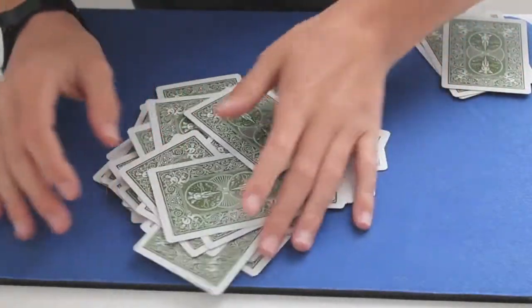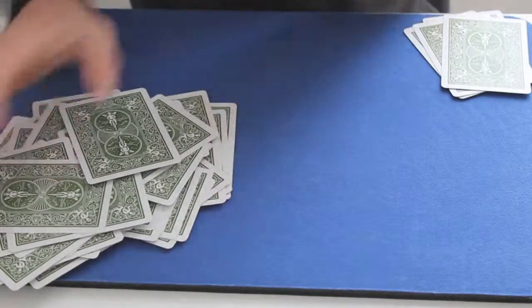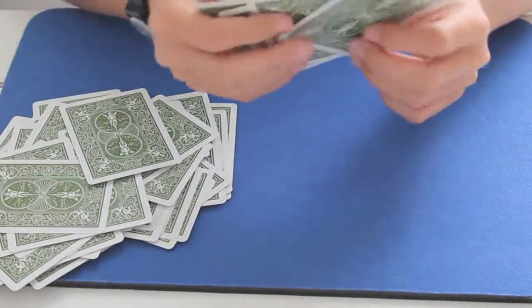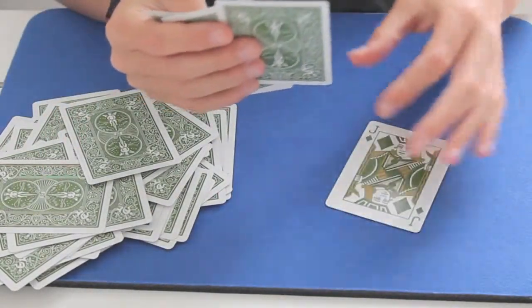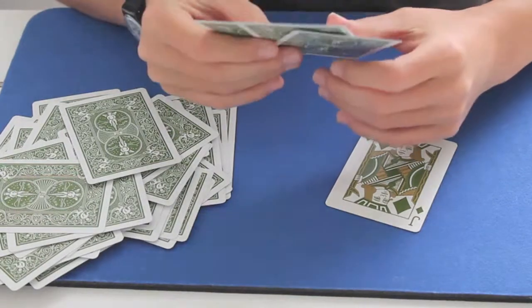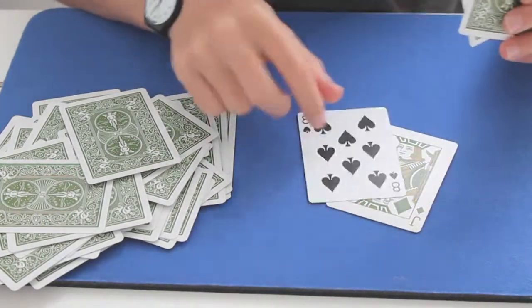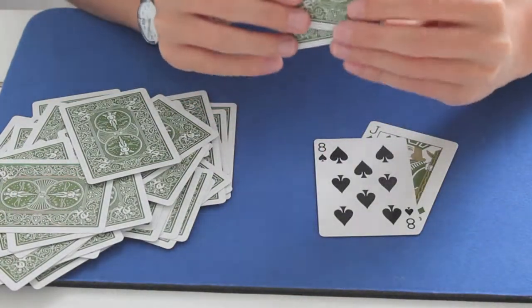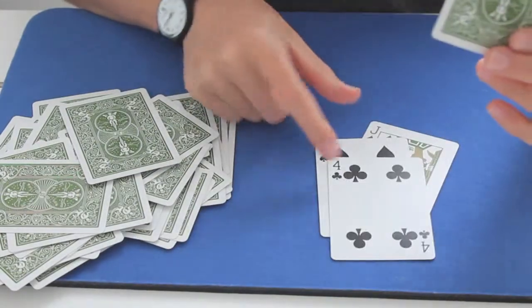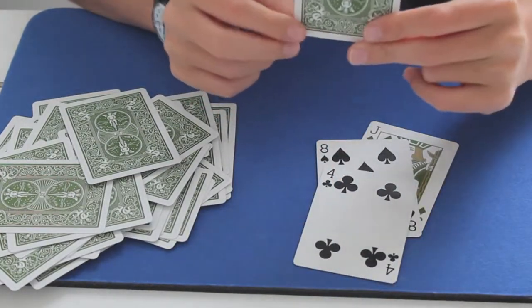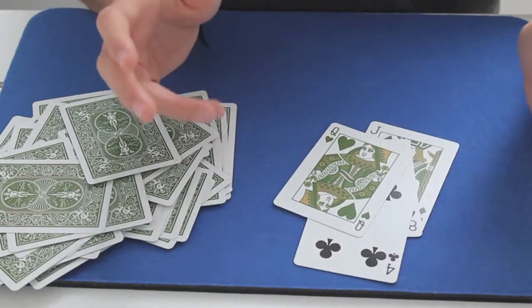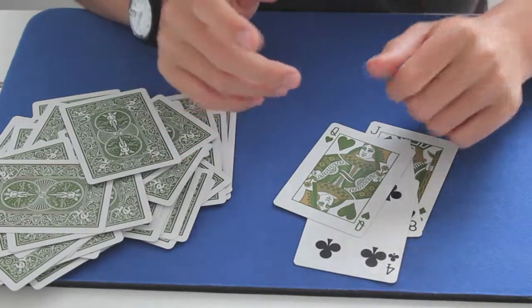So, I'll leave the mess over there. And what did we say first? I think it was Jack of Diamonds. There it is. Then it was Eight of Spades. Eight of Spades. Then we said Four of Clubs. Four of Clubs. And the last one, Queen of Hearts. I'll be right back for the explanation.